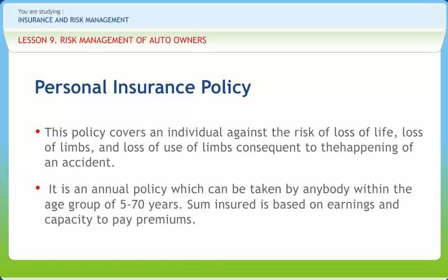Loss of one limb or sight of one eye results in payment of 50% of the sum insured. The second benefit type is permanent partial disablement; in the case of a minor injury, the percentage of compensation is assessed by the attending surgeon. The third is additional cover: a sum equal to 1% of the insured sum, subject to a maximum of Rs. 15,000, is paid if permanent total disability results in loss of employment. Weekly compensation is paid for temporary disablement for a maximum of 104 weeks at the rate of 1% of the sum insured or Rs. 5,000, whichever is lower, and these benefits are available only for those with income from gainful employment.